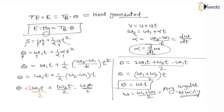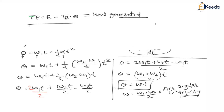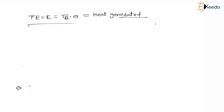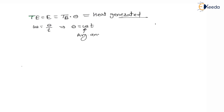We can write this simply as: angular displacement theta = omega_avg × t, because angular velocity = angular displacement / time. Here omega is the average angular velocity, since the angular velocity is continuously changing from omega 1 to omega 2.